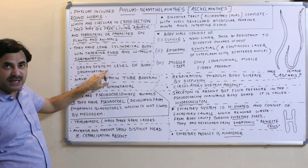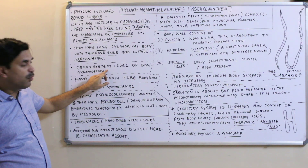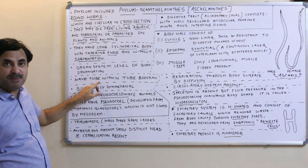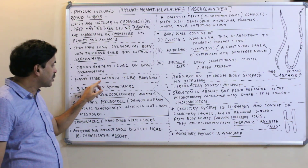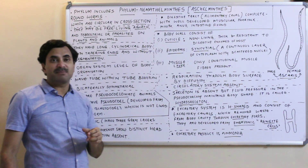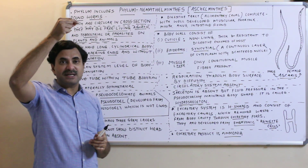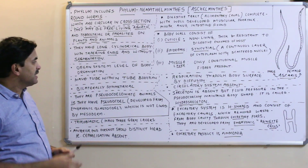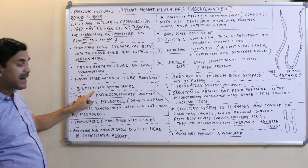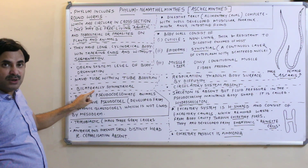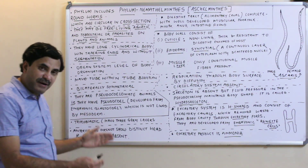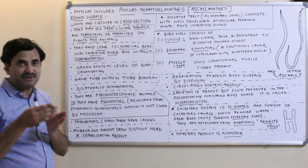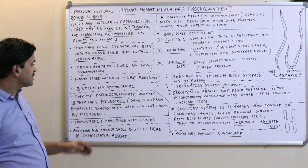They have organ system level of body organization. The body plan is tube-within-tube, meaning at the center there is a complete alimentary canal surrounded on all sides by the body cavity. They have bilateral symmetry, as do all worms — flatworms, round worms, and annelids.